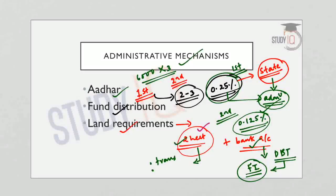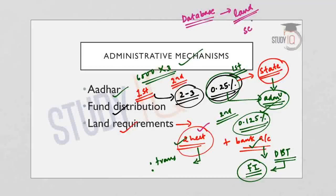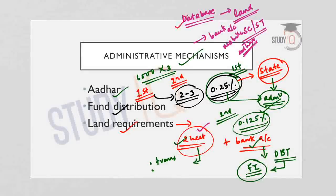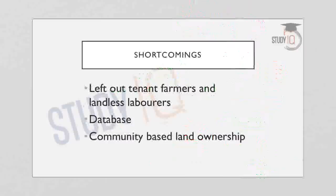Land records would be provided by land revenue and block agricultural officers. The central government has asked state governments to prepare a database of beneficiaries, which should include details such as land holdings, whether they belong to scheduled caste or scheduled tribe communities, bank account details, mobile numbers, and Aadhaar details. State governments must maintain this database of all important information regarding the beneficiaries.